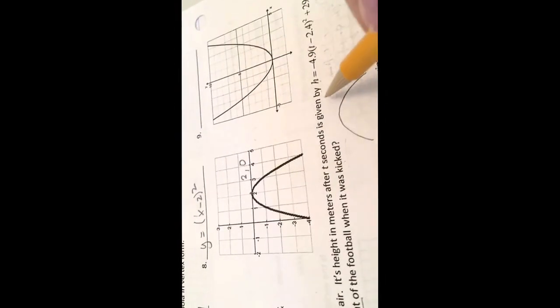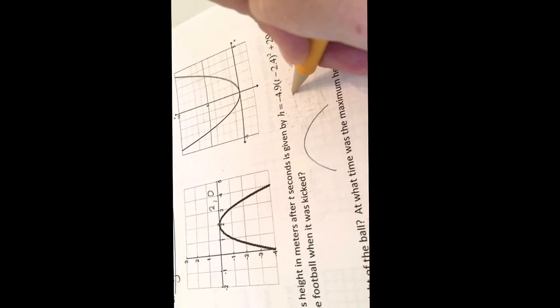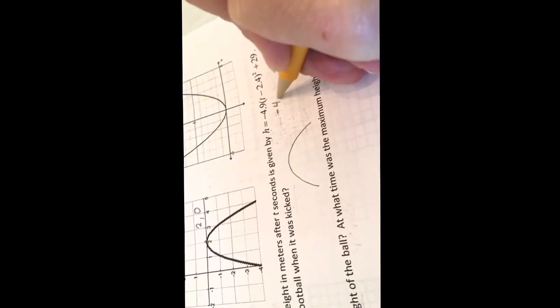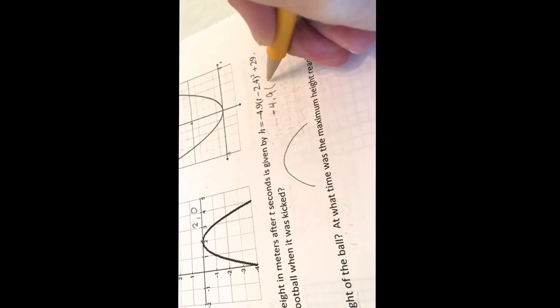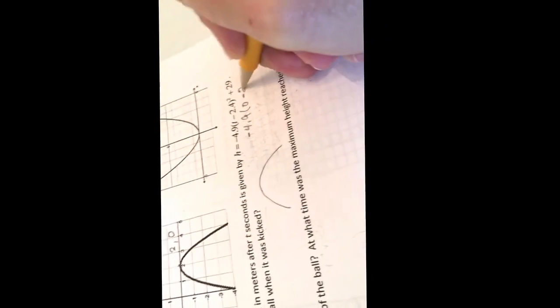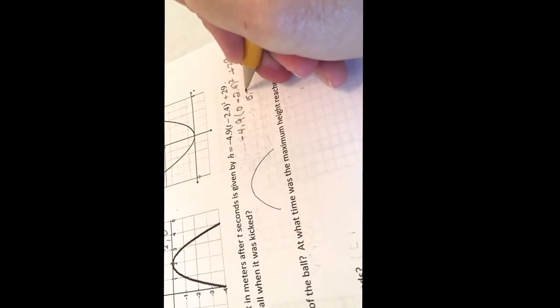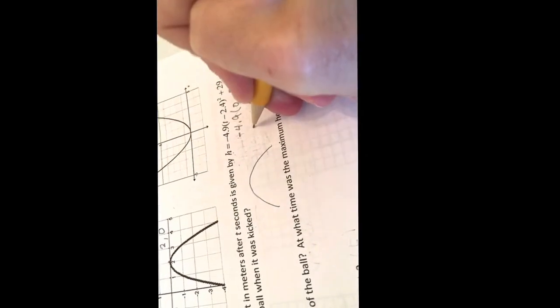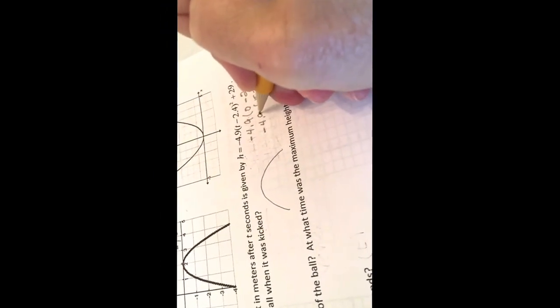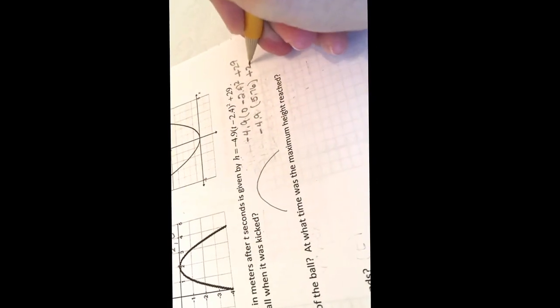Okay, and it says, what is the height? Well, we're going to find out how little above the ground it was. It's also at times 0. Negative 4.9 times 0 minus 2.4 squared plus 29.